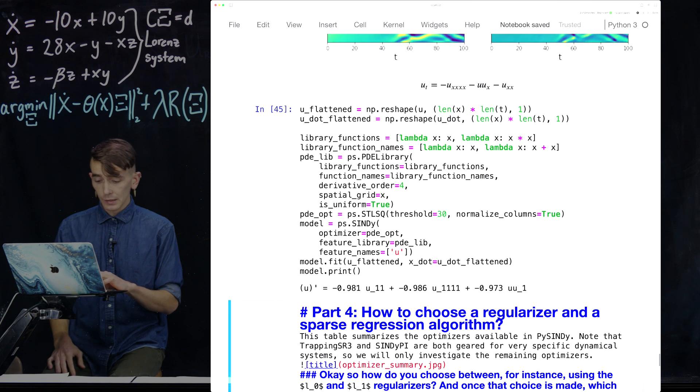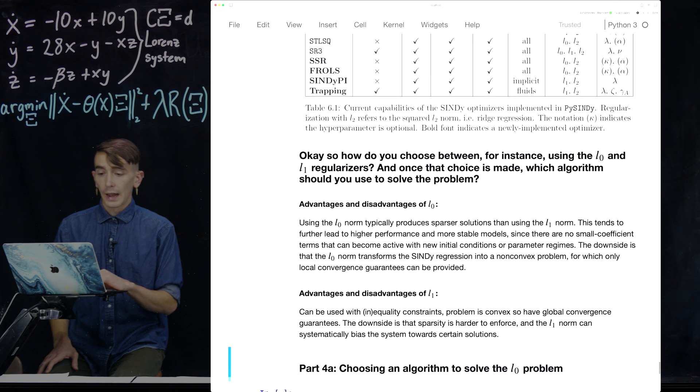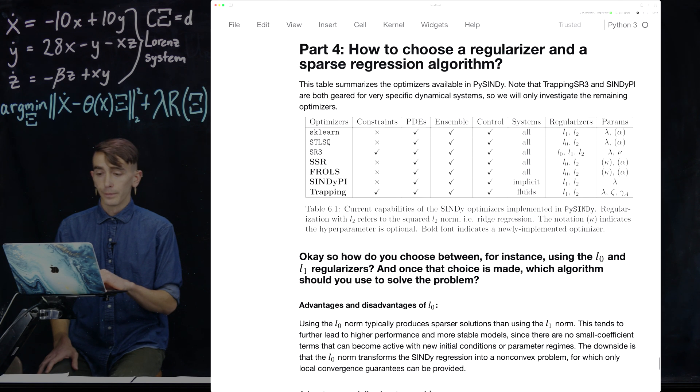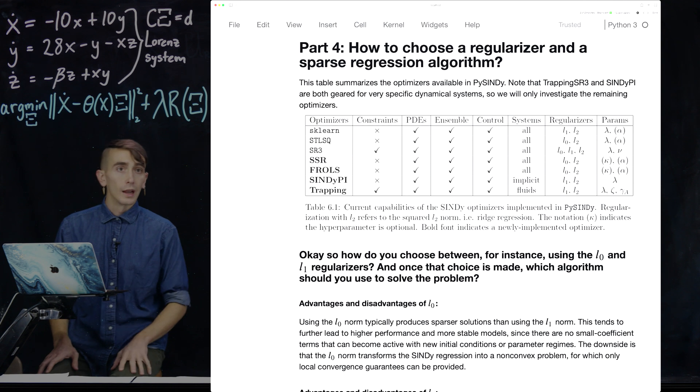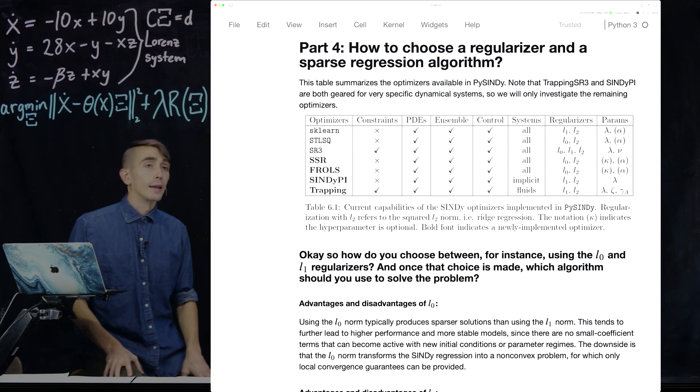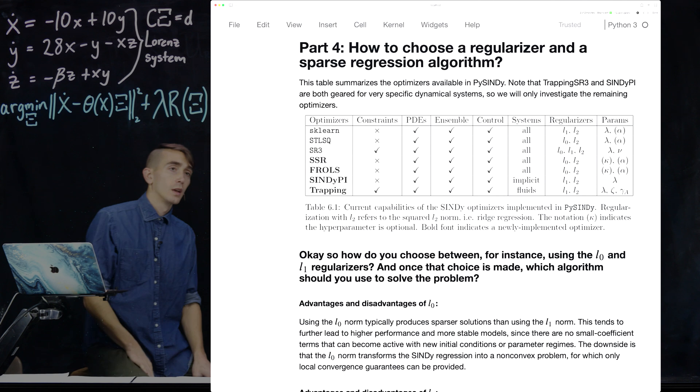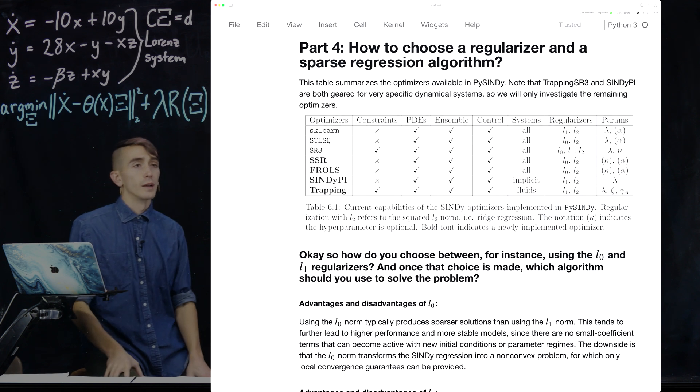Okay. So that's fitting PDEs. Now, I wanted to talk about how do you choose a regularizer and a sparse regression algorithm. And for a second, I'm just going to talk here instead of actually show any code. And I just wanted to have a table here that summarizes all the different optimizers you use in the PySINDy code.